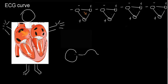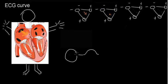Next, it's traveling down the bundle of His and going to depolarize the septal tissue. This will show us a vector in that direction — towards the negative direction — so we'll see a very small negative deflection.